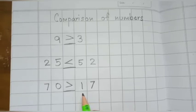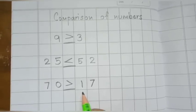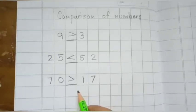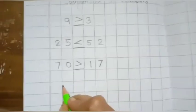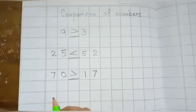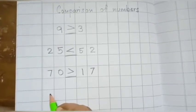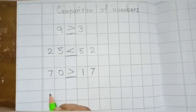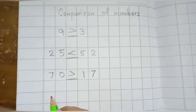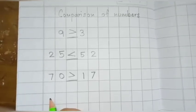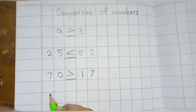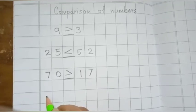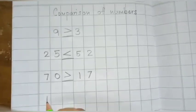I hope greater than and lesser than is very clear to you. Now let us come to the sign equal to. Where do we put the equal to sign? When we get two same numbers, we put the equal to sign — when both the numbers are the same. For example, I will write a number on my left hand side.